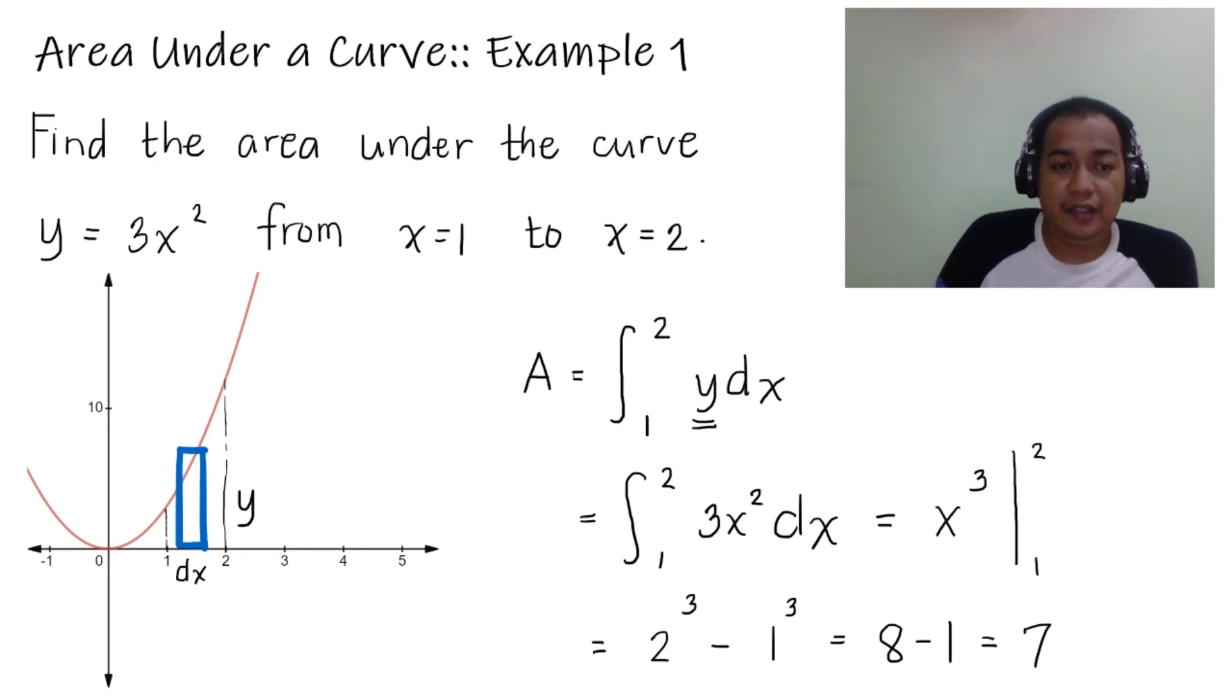So, the area under the curve of 3x squared from x equals 1 to x equals 2 is 7 square units. That is the area under the curve.